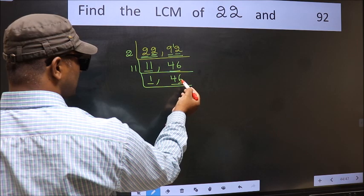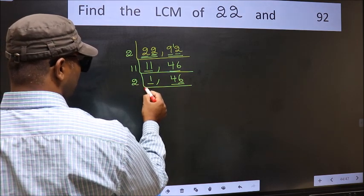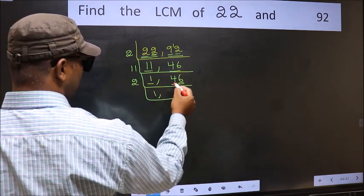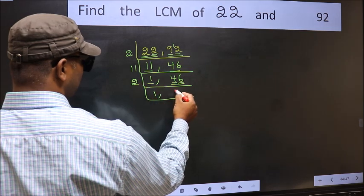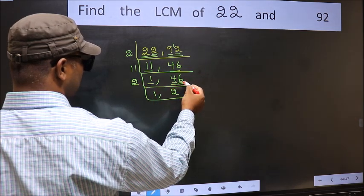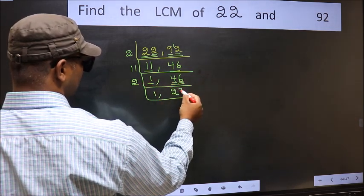Last digit is even, so take 2. First digit 4, when do we get 4 in the 2 table? 2 twos 4. The other digit 6, when do we get 6 in the 2 table? 2 threes 6.